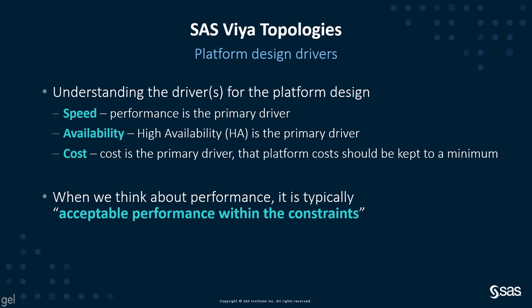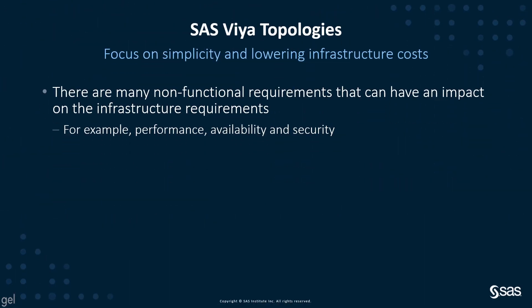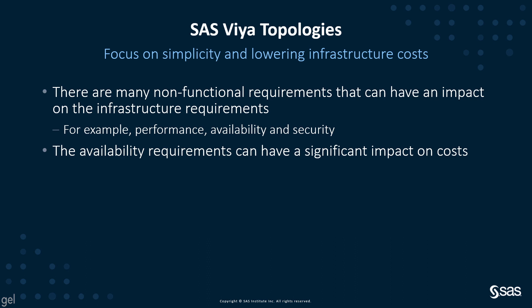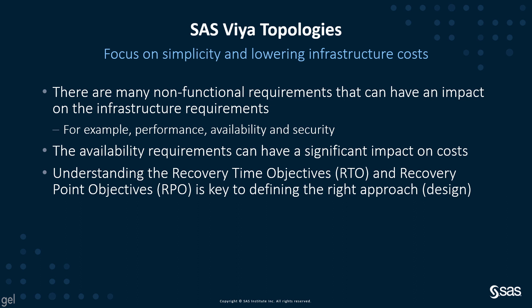When thinking about performance, it is typically acceptable performance within constraints, and the main constraint is usually budget or cost. There are also many non-functional requirements that can impact infrastructure requirements and hence costs — for example, performance, availability, or security can introduce new or additional components. The availability requirements can have a significant impact on cost, and we usually say that the last nine of availability you purchase is the most expensive IT cost. Understanding recovery time objectives and recovery point objectives is key when defining the right platform design.